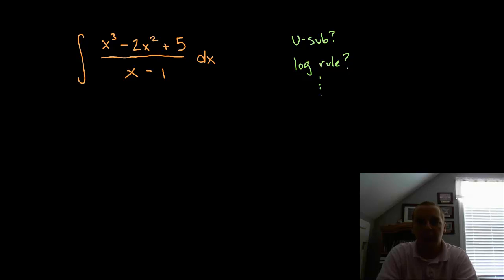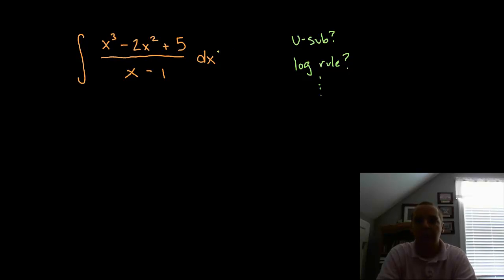For this example we're going to try to integrate x cubed minus 2x squared plus 5, divided by x minus 1. Thinking through what techniques might help, u-substitution doesn't seem like the best choice — there's really no composition, no layers, no good choices for u. I don't see one thing being the derivative of something else to fashion a u du type of setup.